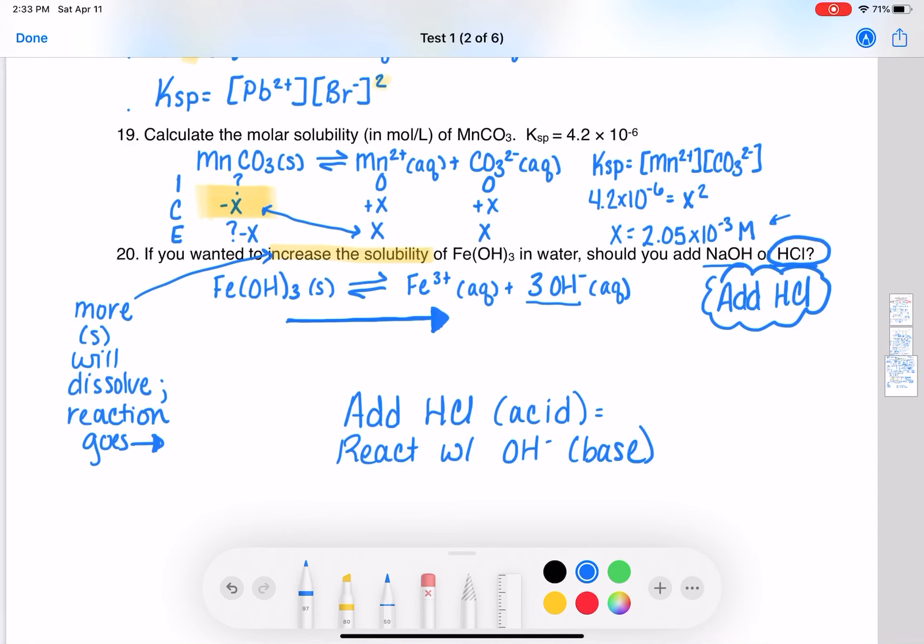And when that happens, that's the same as removing the hydroxide from the equation. So we are removing the hydroxide from the equation, which is going to cause this equilibrium to shift to the right, to try to put back the hydroxide that we are removing by adding an acid.